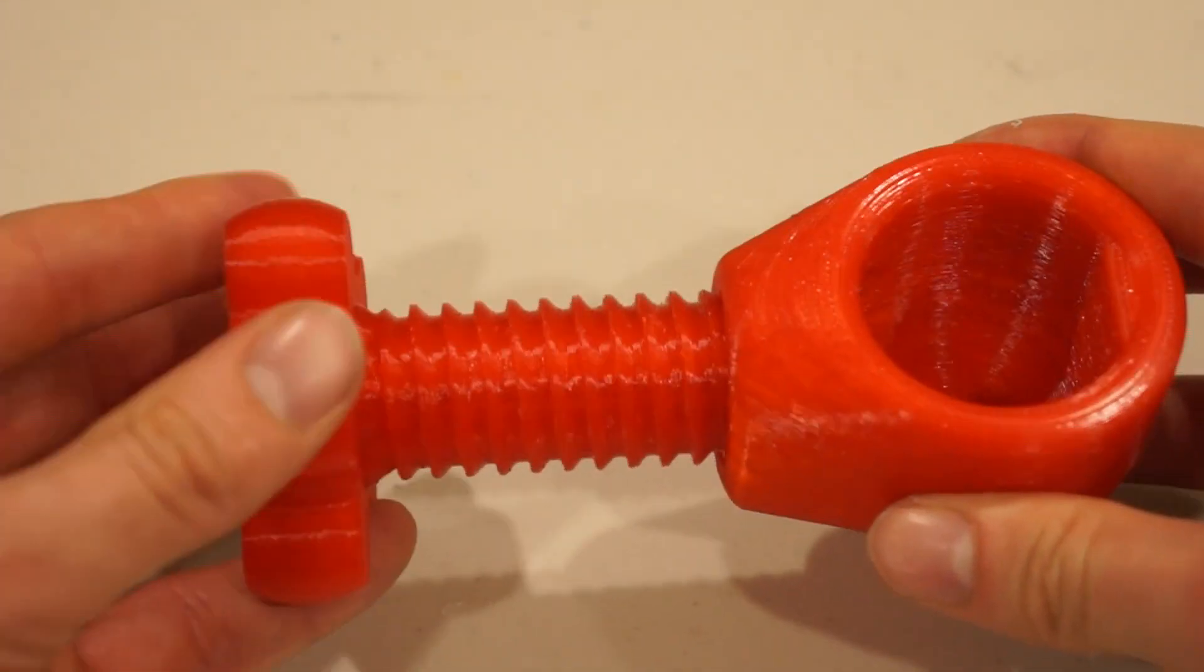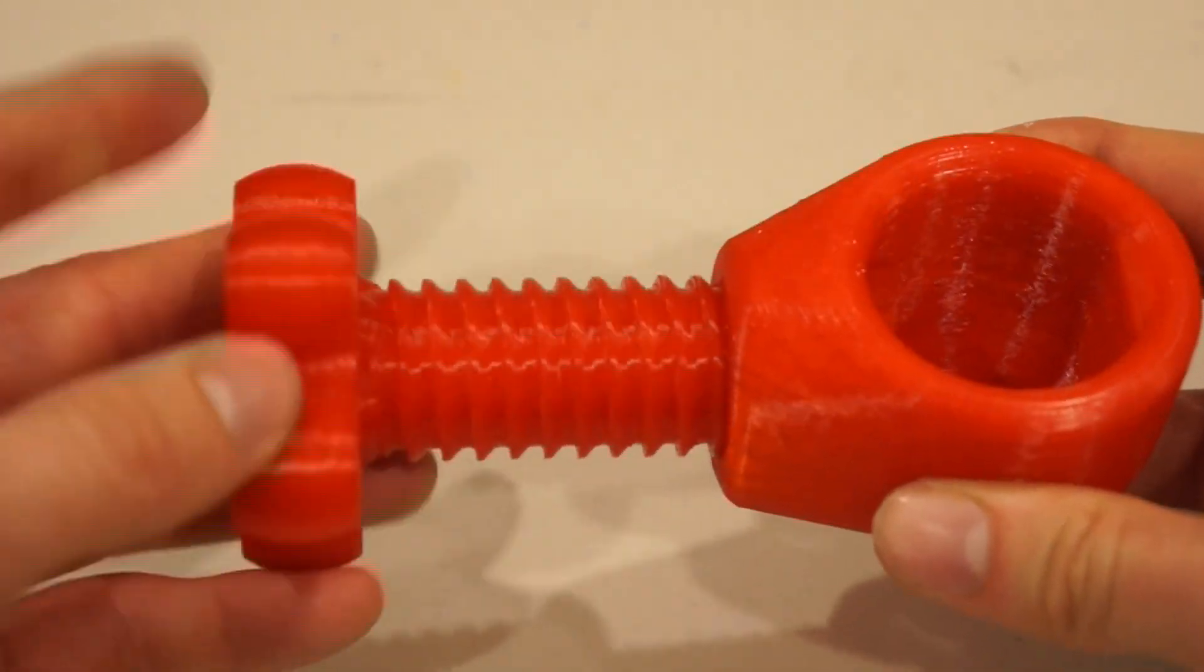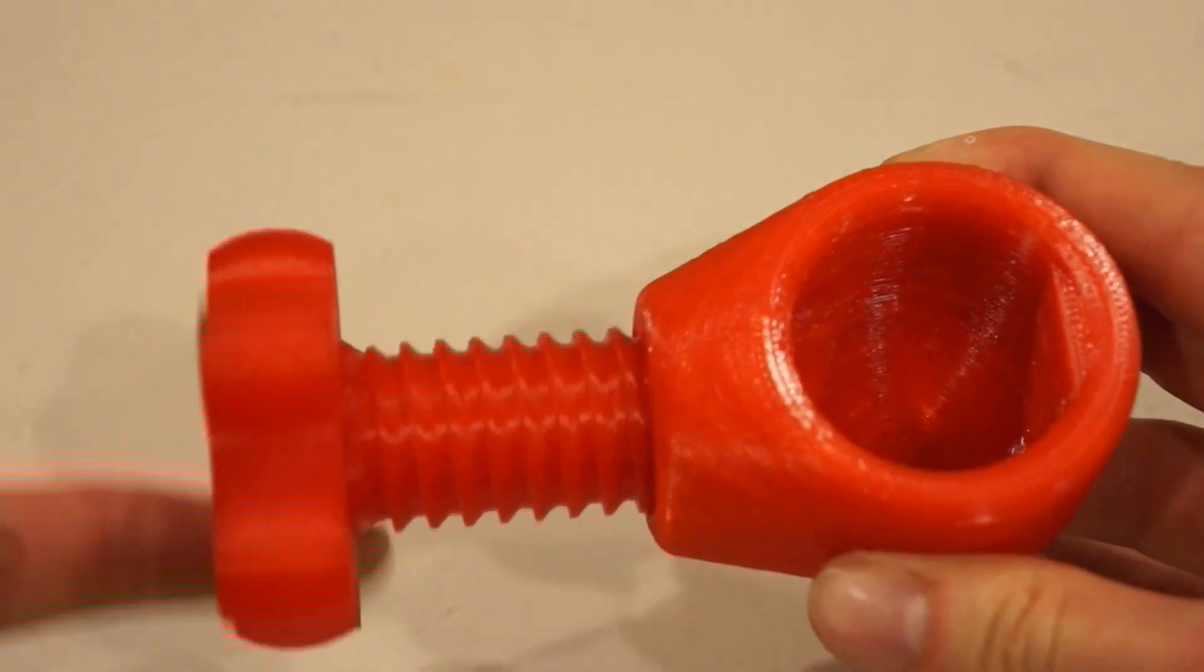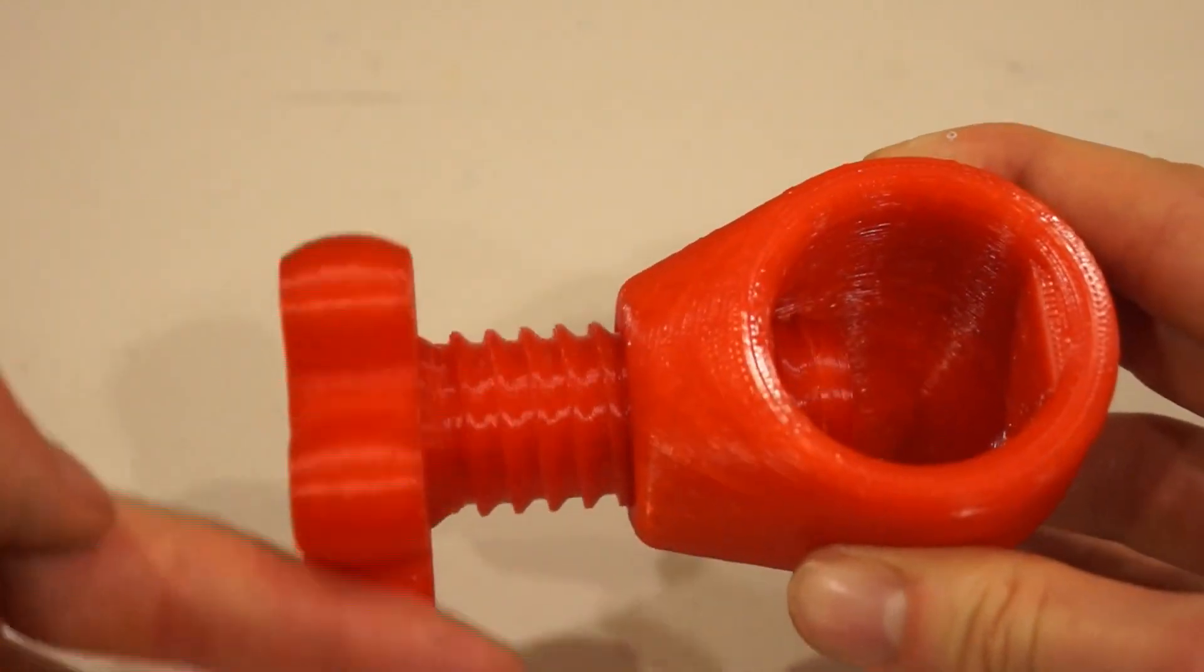For example, after printing out the default cube, the first thing I printed out was this nutcracker. I honestly just wanted to make something where the pieces interacted. I searched up a bolt, and this is what came up, and I think it's super cool.